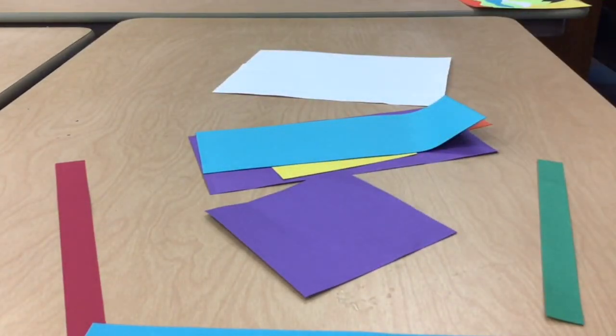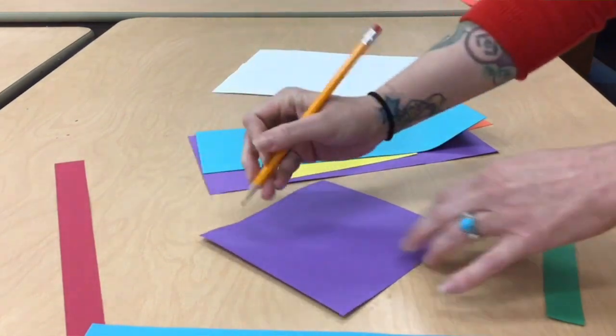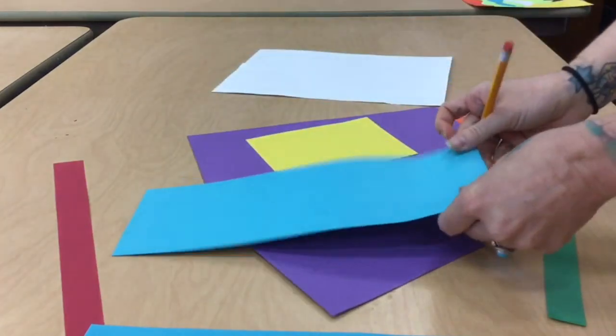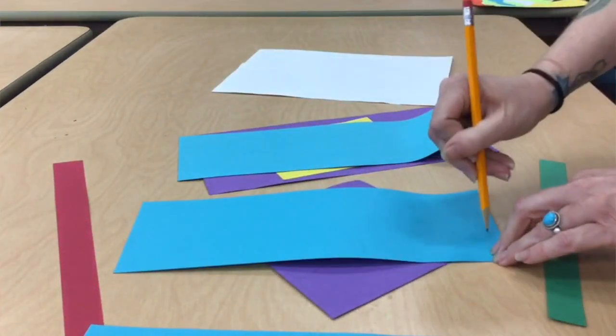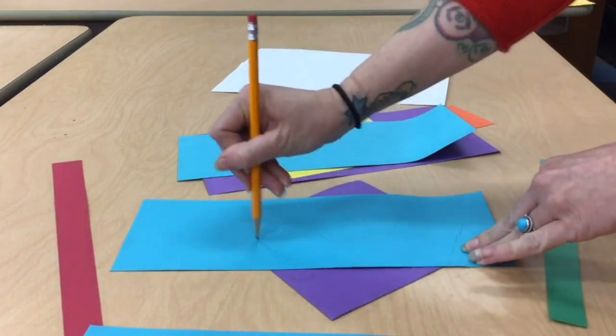Next use your pencil to create shapes and designs onto all of your pieces of scrap paper. Remember to be creative. You can use curvy lines, zigzag lines. You can create geometric shapes or organic shapes.